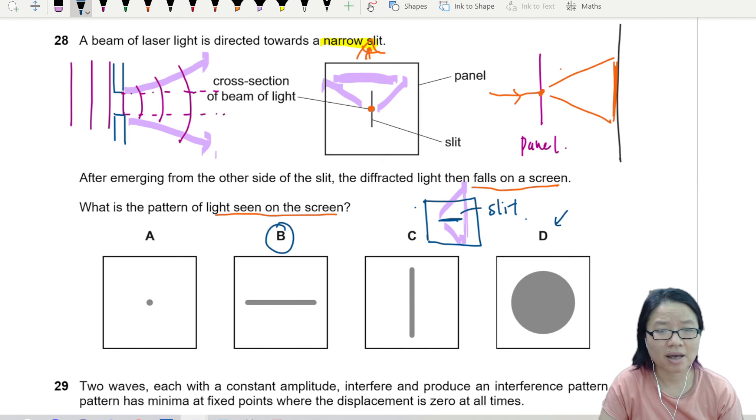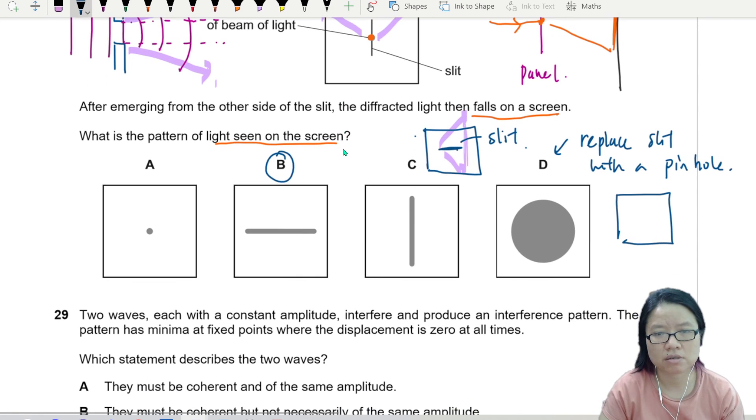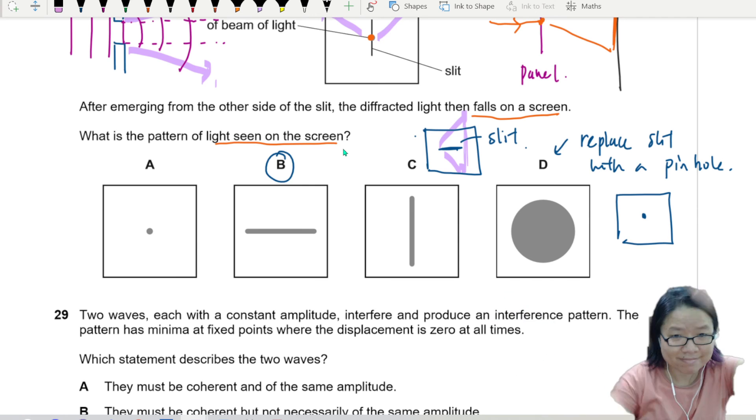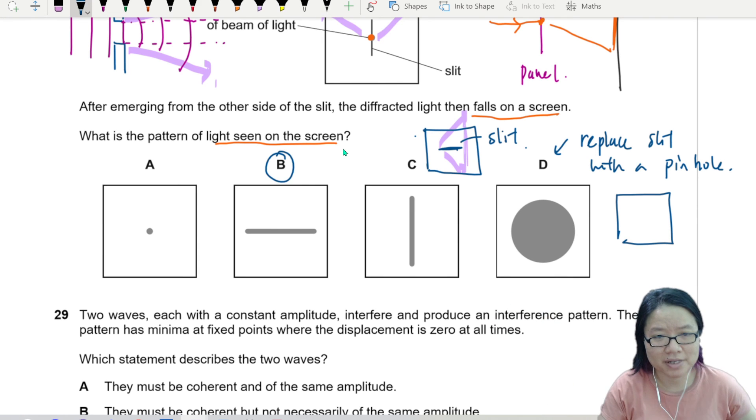D happens if instead of a slit, you replace the slit with a pinhole. Like your panel looks like this. Then it will spread in all directions. So replace it with a tiny hole.